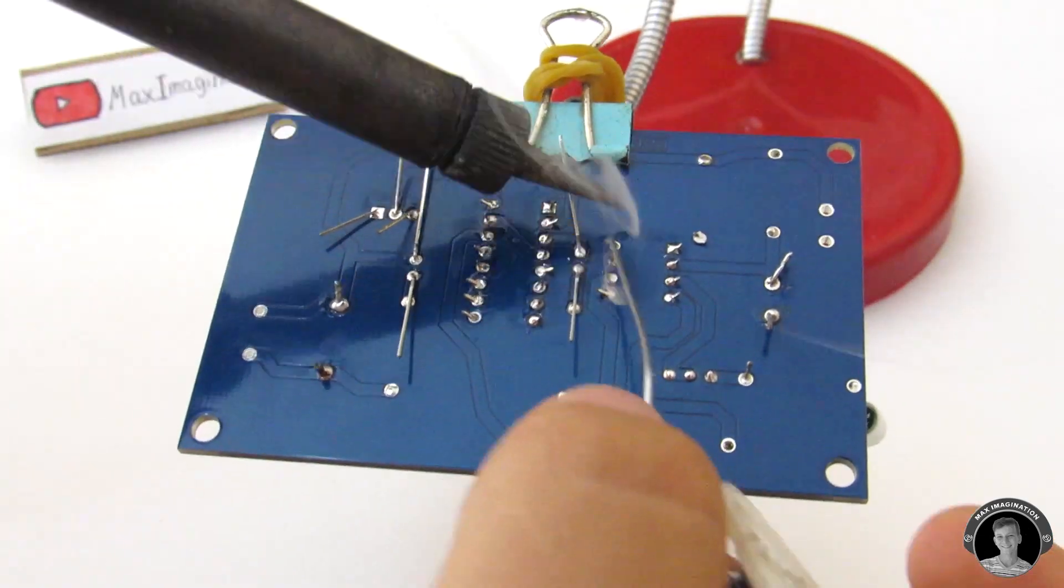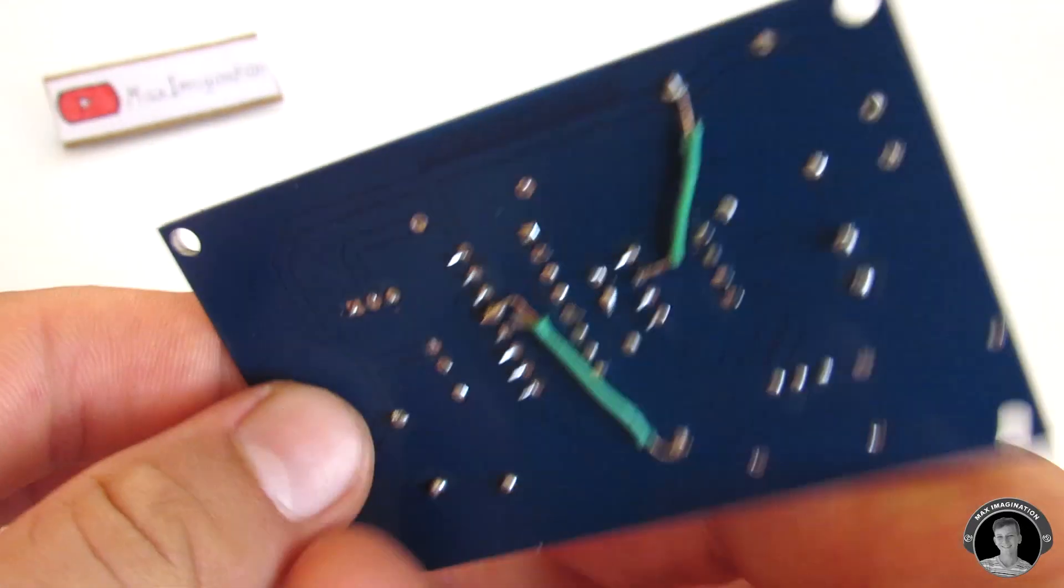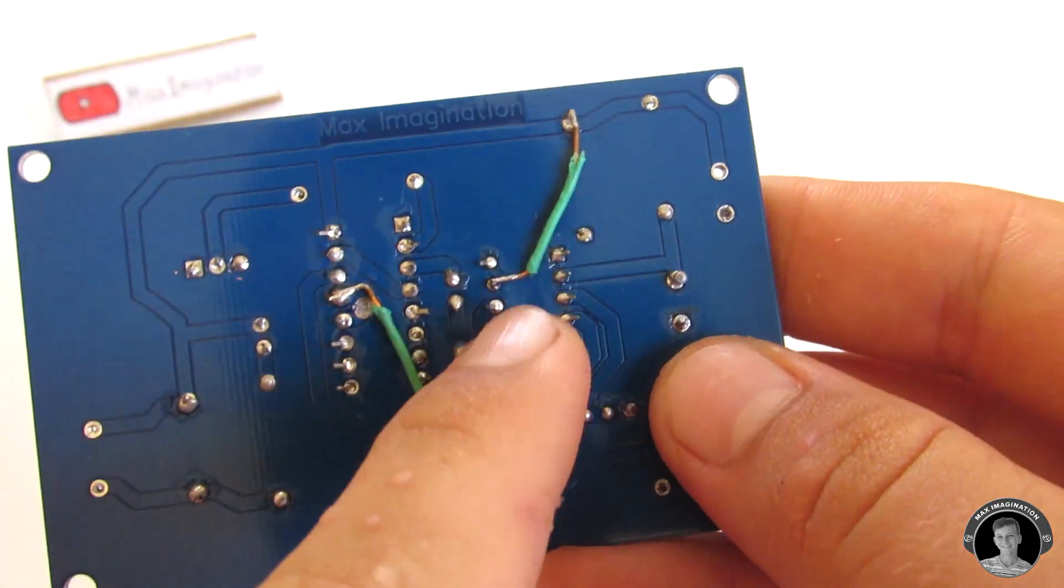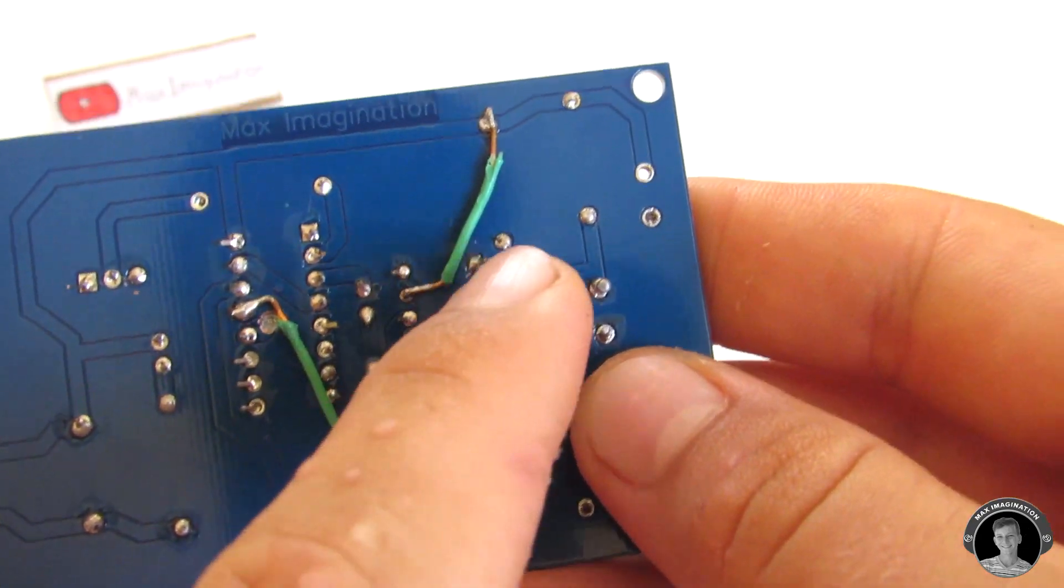During the designing process, I did forget a couple of connections, which are pin 13 of the Decade Counter goes to ground, and pin 7 of the op-amp IC goes to the positive rail.